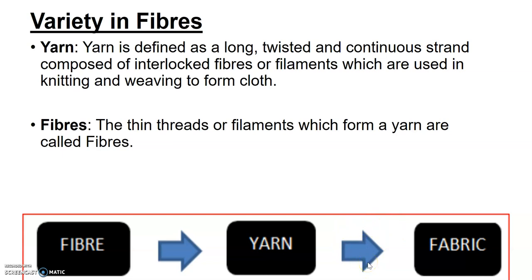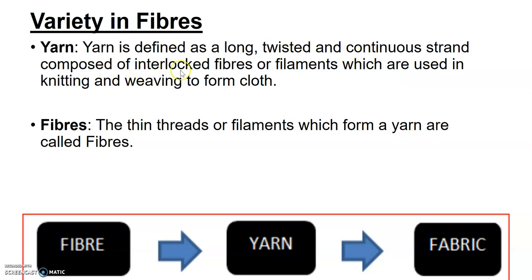Yarn is then changed to fabric either by weaving or by knitting. In this chapter, we will be learning about two fibers: one is cotton and the other is jute. Then we will see how we can make yarn, and after making yarn we will understand how the fabric is made. A yarn is defined as a long twisted continuous strand composed of interlocked fibers or filaments used in knitting or weaving. In simple language, yarn is a long thread-like structure formed from fiber by twisting and turning. Fibers are thin strands or filaments from which yarn can be made.